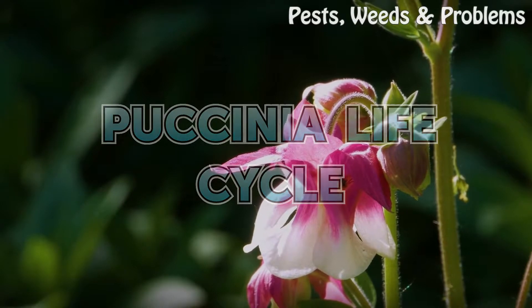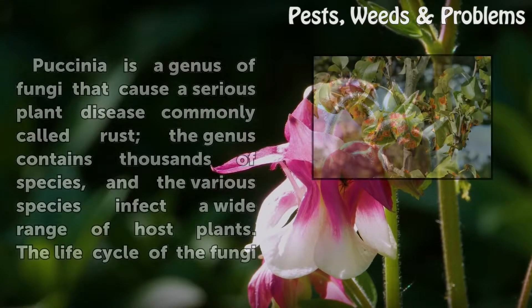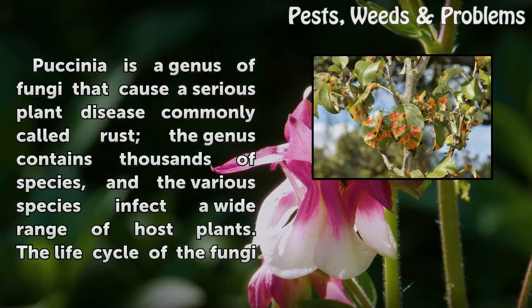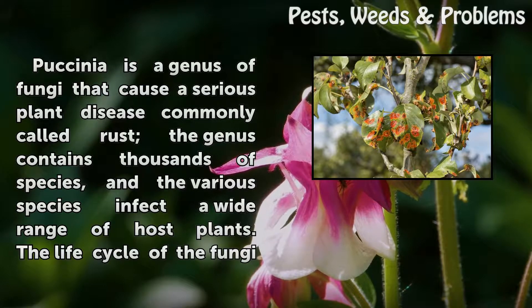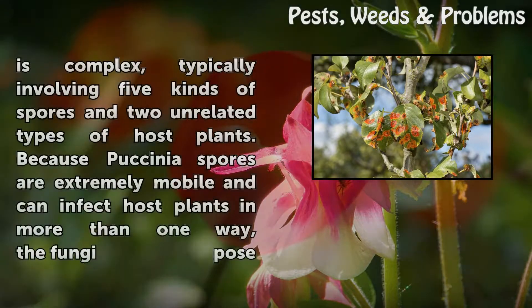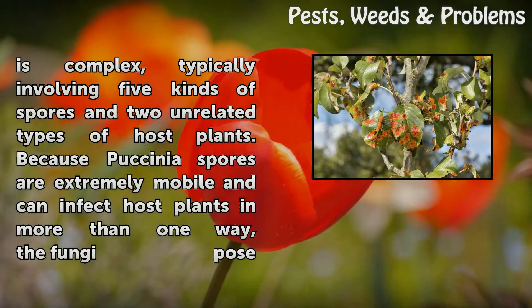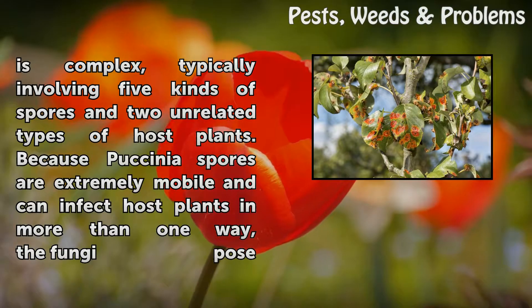Vaxenia is a genus of fungi that cause a serious plant disease commonly called rust. The genus contains thousands of species, and the various species infect a wide range of host plants. The life cycle of the fungi is complex, typically involving five kinds of spores and two unrelated types of host plants.